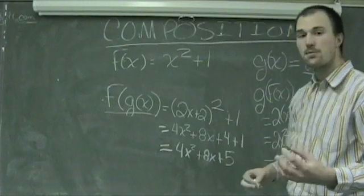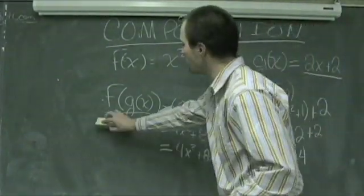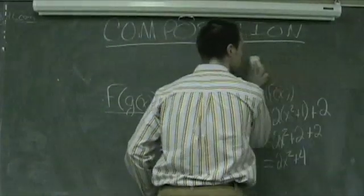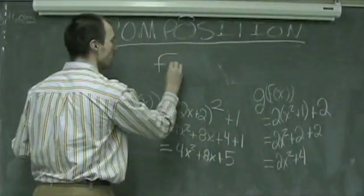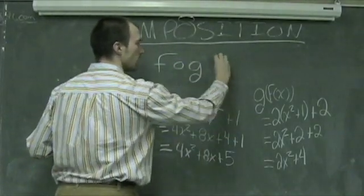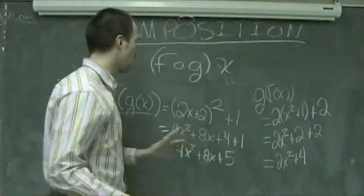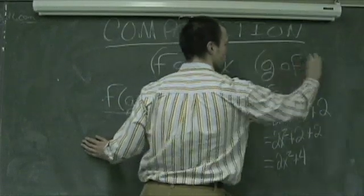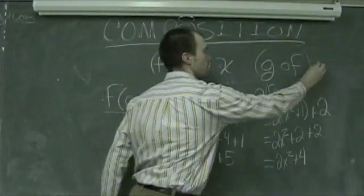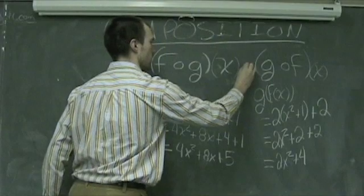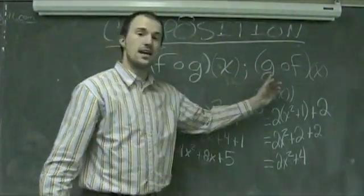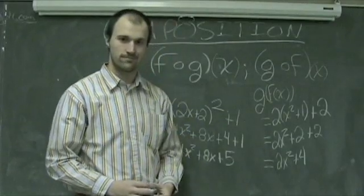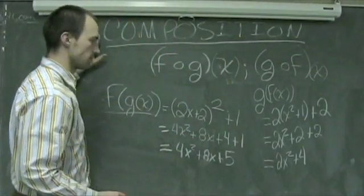Finally, one last type of notation issue that you might see is instead of f of g of x or g of f of x, you may see this rewritten as f open dot g of x or g open dot f of x. So, it doesn't stand for fog and this doesn't stand for golf, it's f of g of x or g of f of x. There we go. So, composition of functions. Good luck.